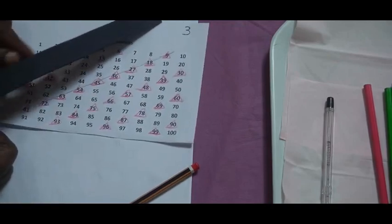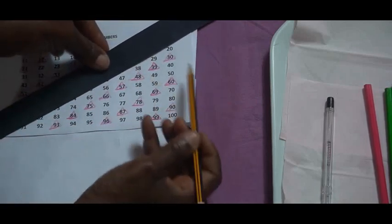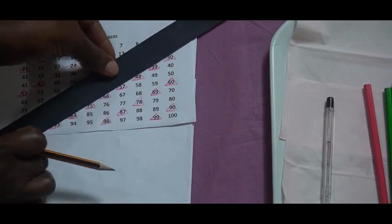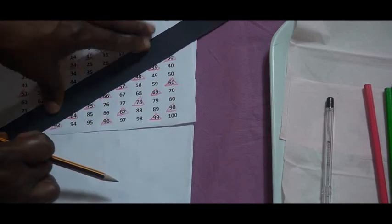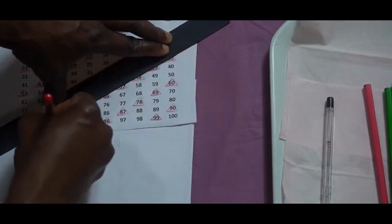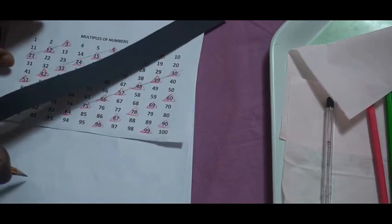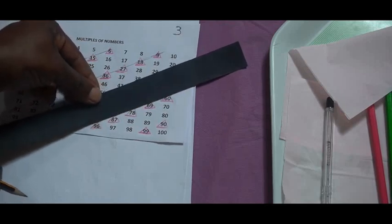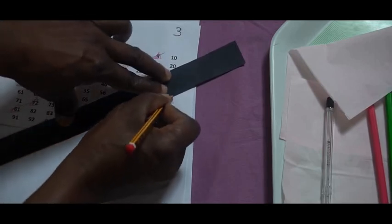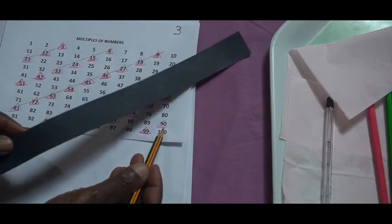I'll join these ones here: 30, 39, 48, 57, 66, 75, 84, 93. Join them, another one here: 60, 69, 78, 87, 96, and diagonal. And then 90, 99.